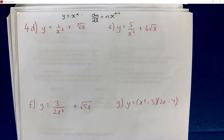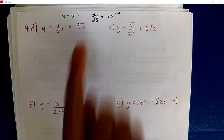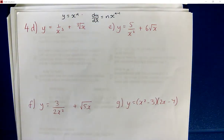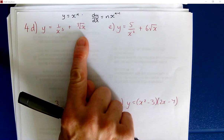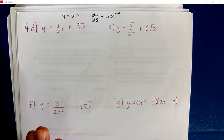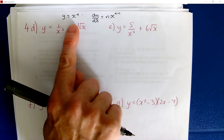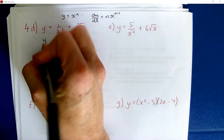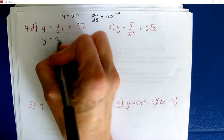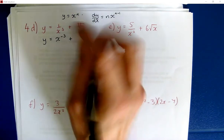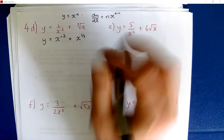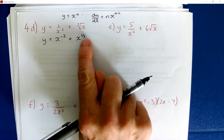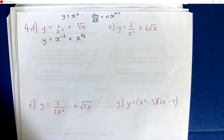That means we need to have everything in this format before we can start to differentiate. These formats are not helpful, so the first step is always to write everything that involves an x as a power of x. Remember, 1 over is a negative power, and this is the third root of x, so that's x to the power of one third. Flower power, underground roots — so the root is on the bottom of the fraction.